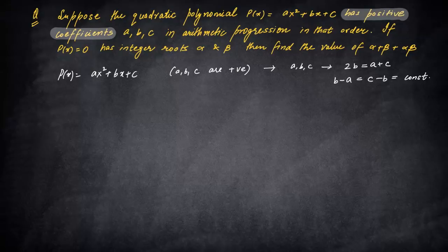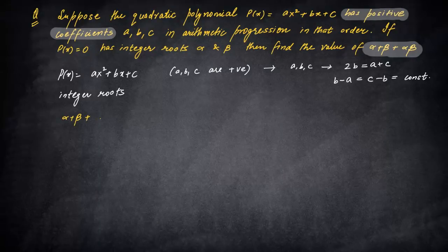Now you are told that P(x) has integer roots. Many of us will start thinking of conditions for integral roots, but let's wait. What is asked is you need to find the value of α + β + αβ, that is sum of roots plus product of roots. The sum of roots equals -b/a, and the product of roots is c/a. So we can write this as -b/a + c/a.